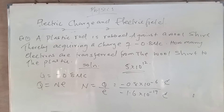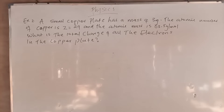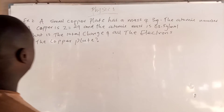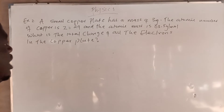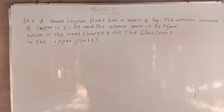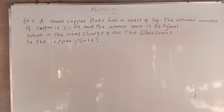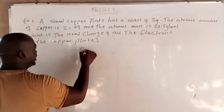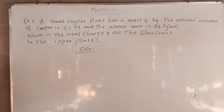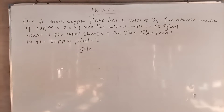Let's move to example number 2. A small copper plate has a mass of 3 grams. The atomic number of copper is 29, and the atomic mass is 63.5 grams per mole. What is the total charge of the electrons in the copper plate? This question is a little bit tricky — before we solve this, we have to apply stoichiometry.